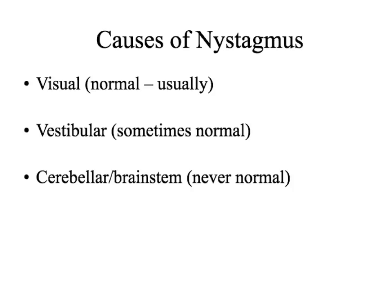There are three basic causes for nystagmus. The first is a visual cause called the optokinetic reflex — basically, if you're driving down the road past a picket fence, as the fence goes by and you try to keep your eyes fixed on the newest thing coming by, it will actually give you a normal nystagmus. The optokinetic nystagmus is typically normal, and if it's absent, that would be abnormal.